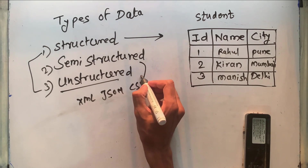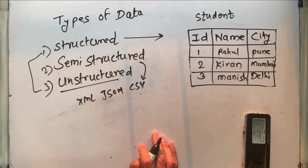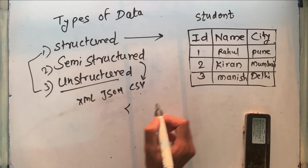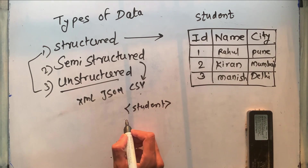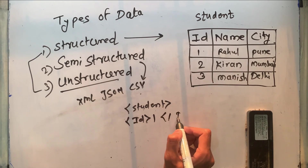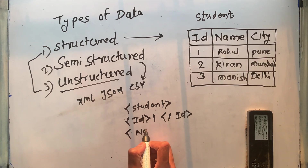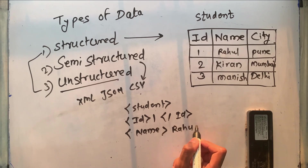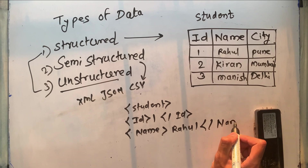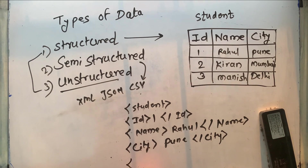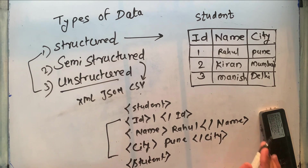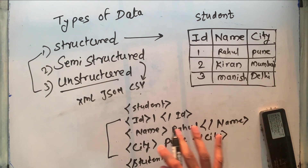These are examples of semi-structured data — there is a structure but it has flexible columns. For example, in XML format: the student is the node, then there is an ID node, then a name node with value 'Rahul', then a city node, and finally the student closing tag. This represents one row of information.